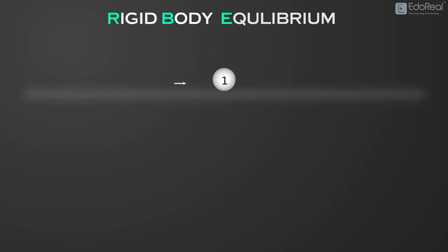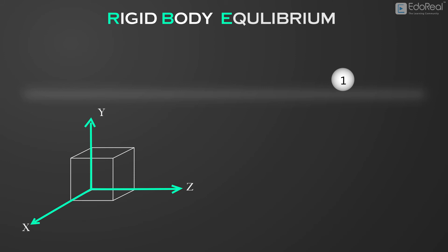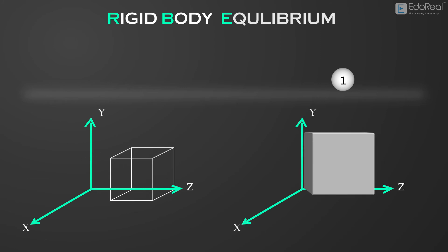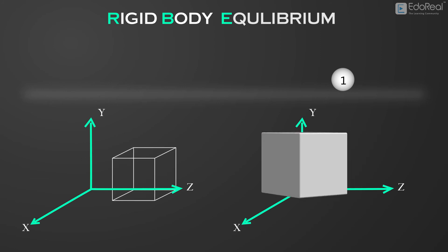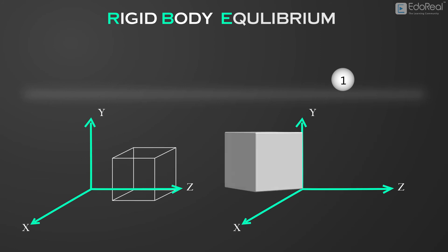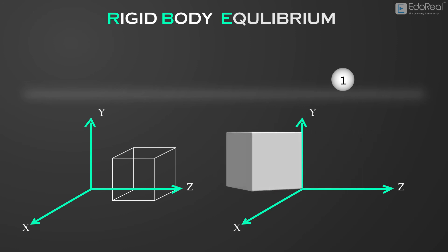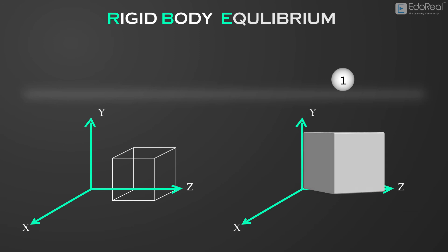In general, a force acting on a particle tends to cause the particle to translate. Similarly, a force on a body not only tends to cause the body to translate, as in the case of the particle, but also tends to cause the body to rotate about any axis which does not intersect with or is not parallel to the line of action of the force. This tendency to rotate is called the moment.